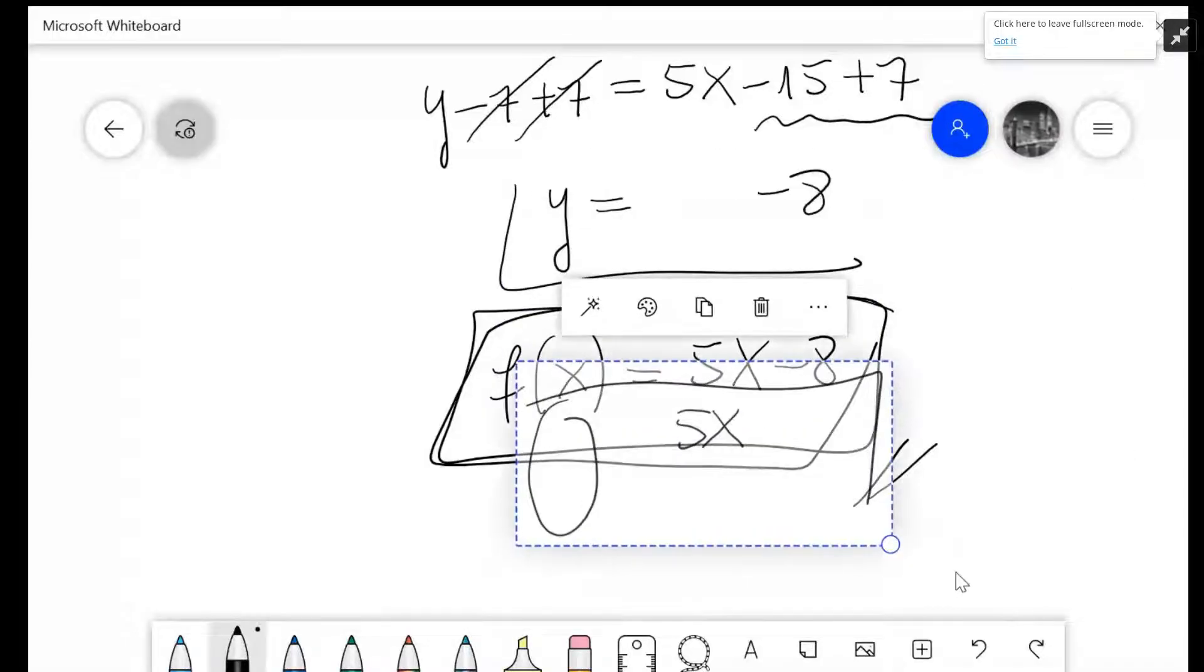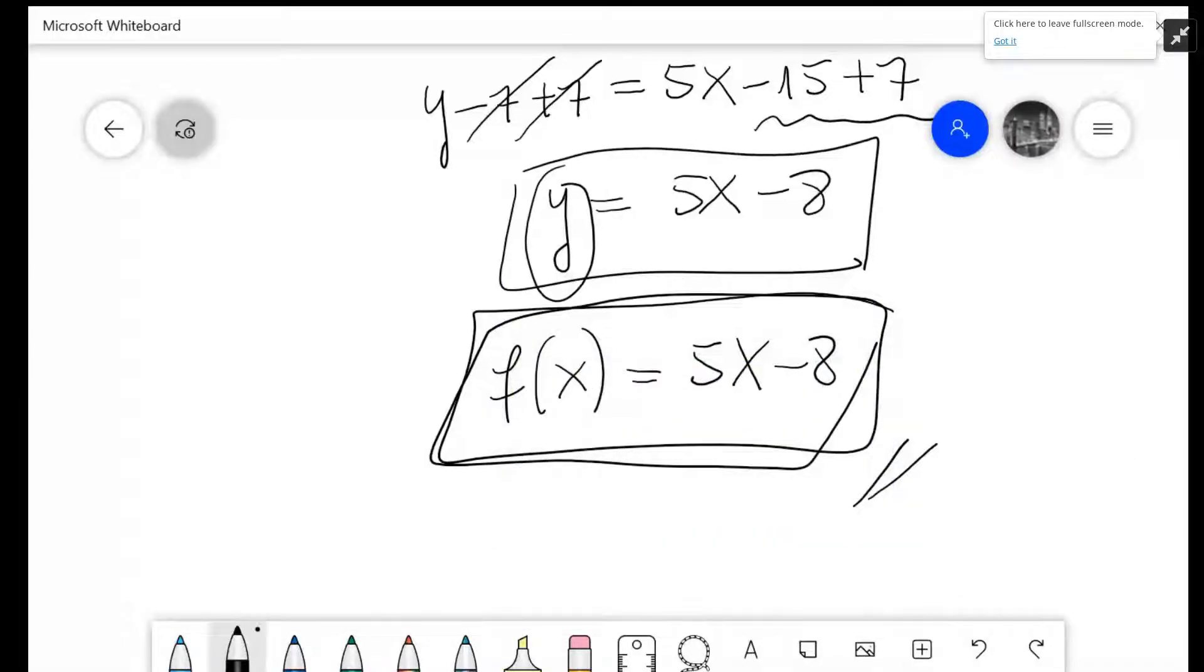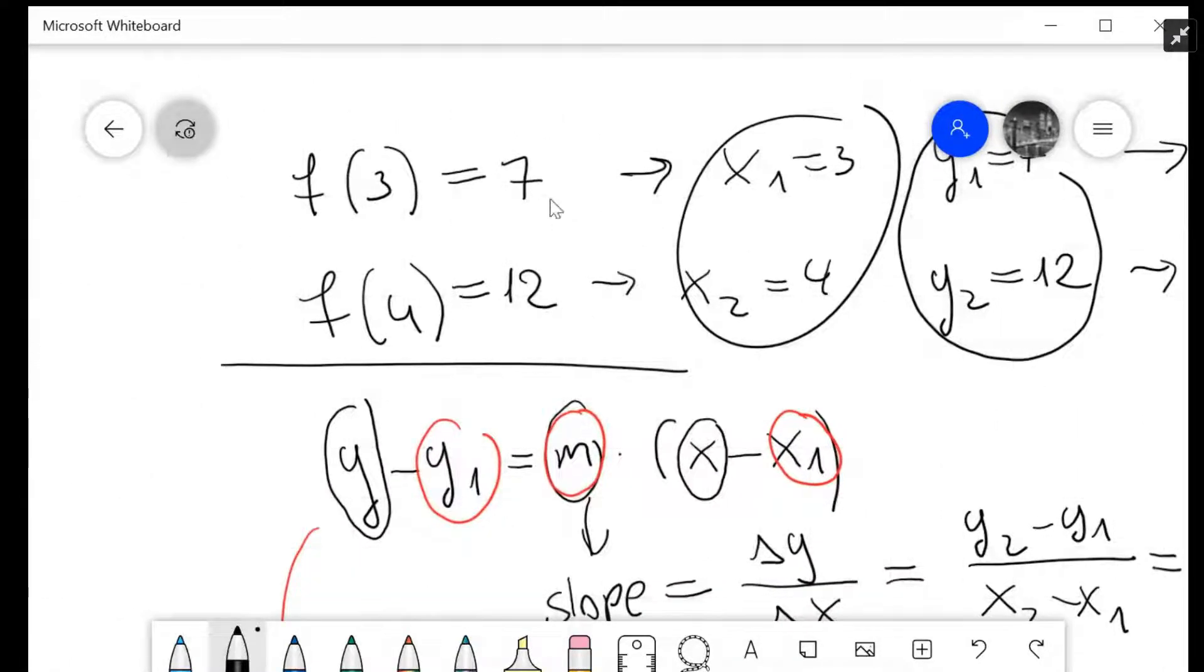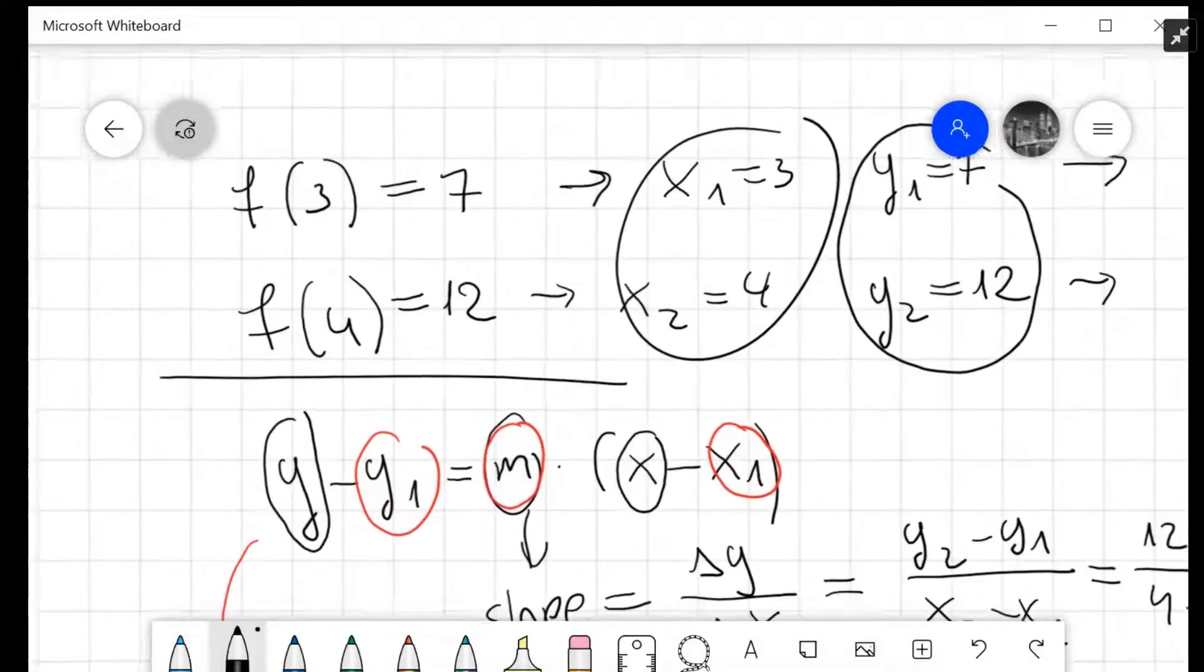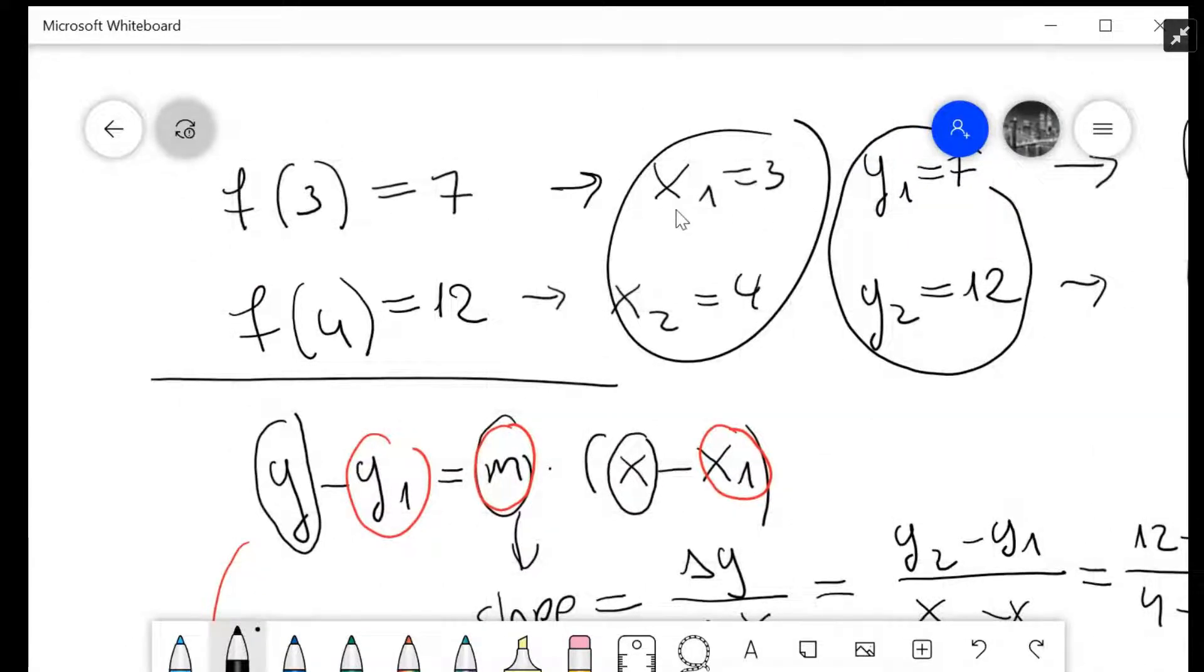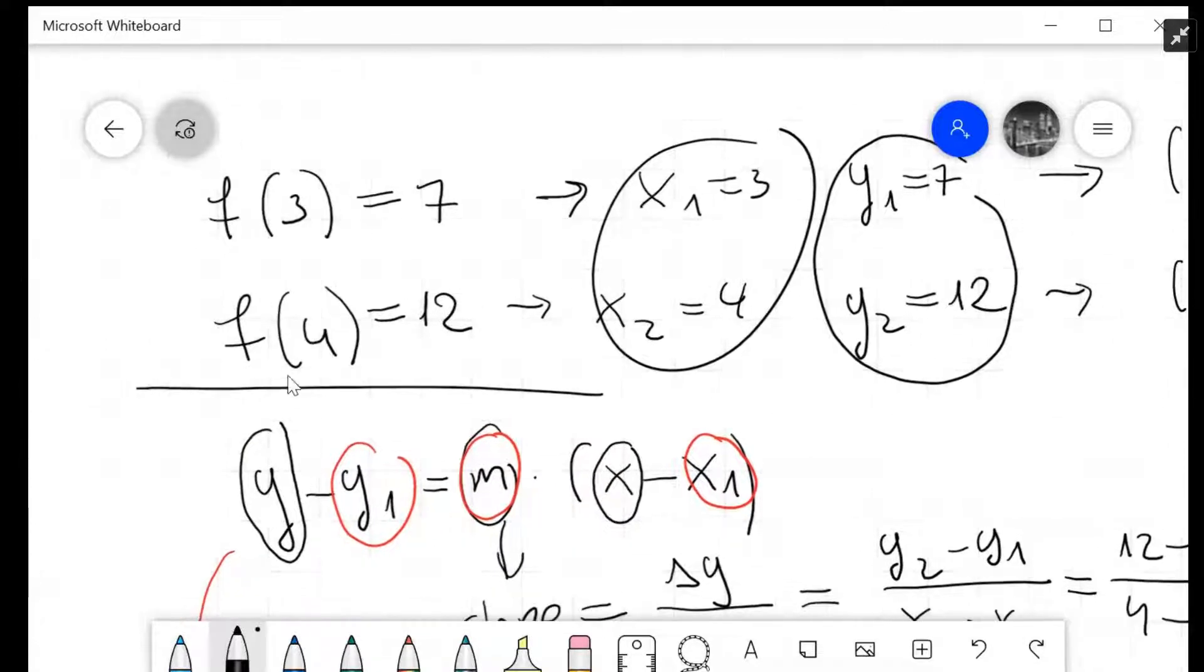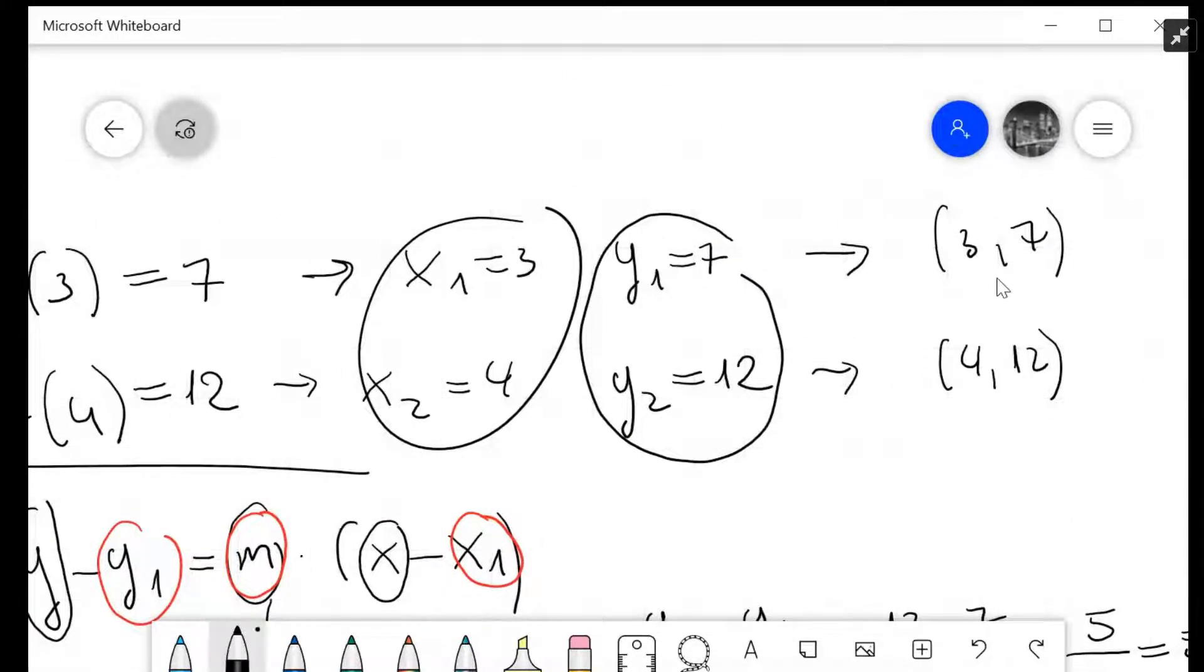Here we have the same thing written out. I gave them indexes. For the first data, f(3) = 7, so x₁ = 3 and y₁ = 7. For the next one, f(4) = 12, which means x₂ = 4 and y₂ = 12.